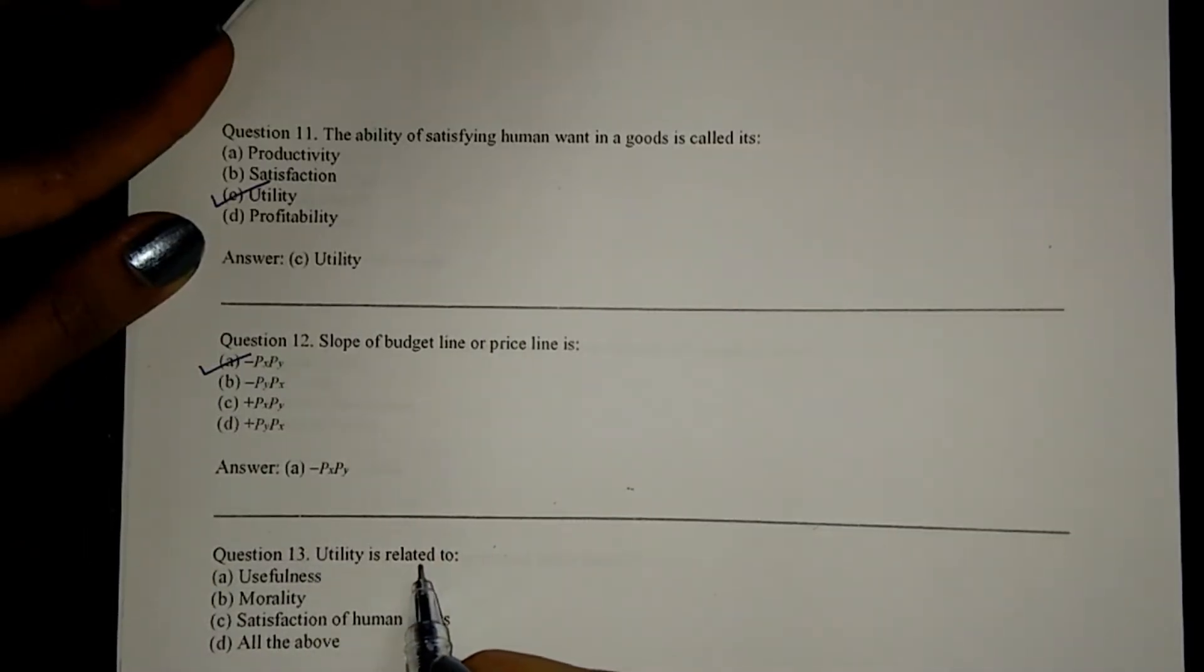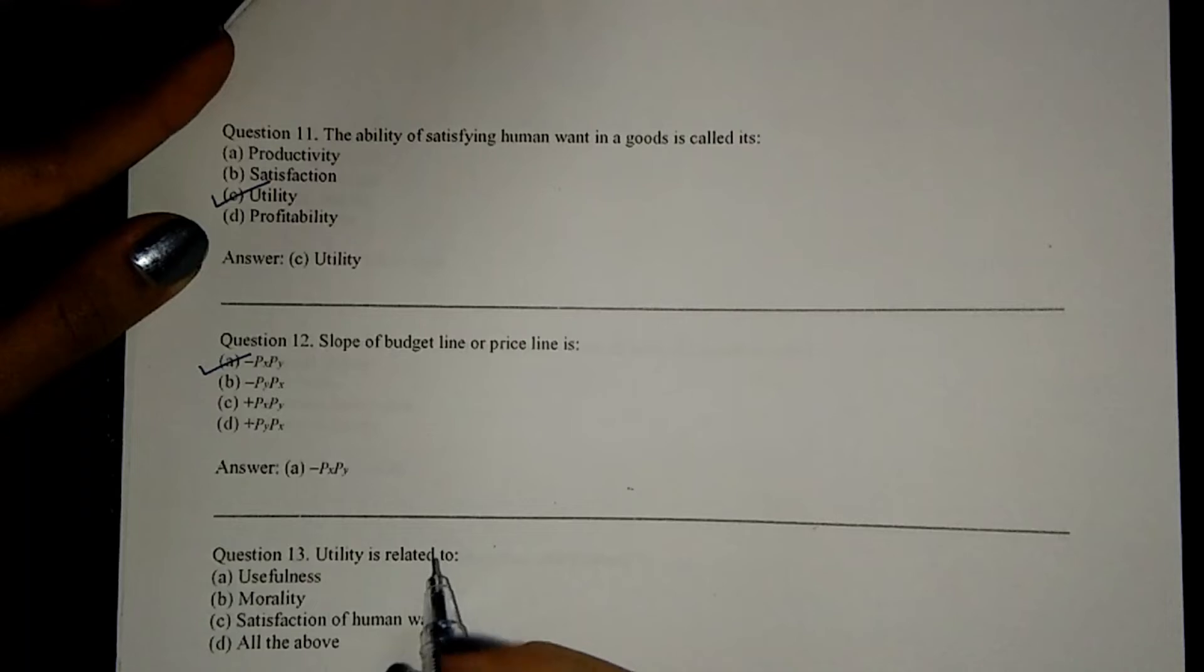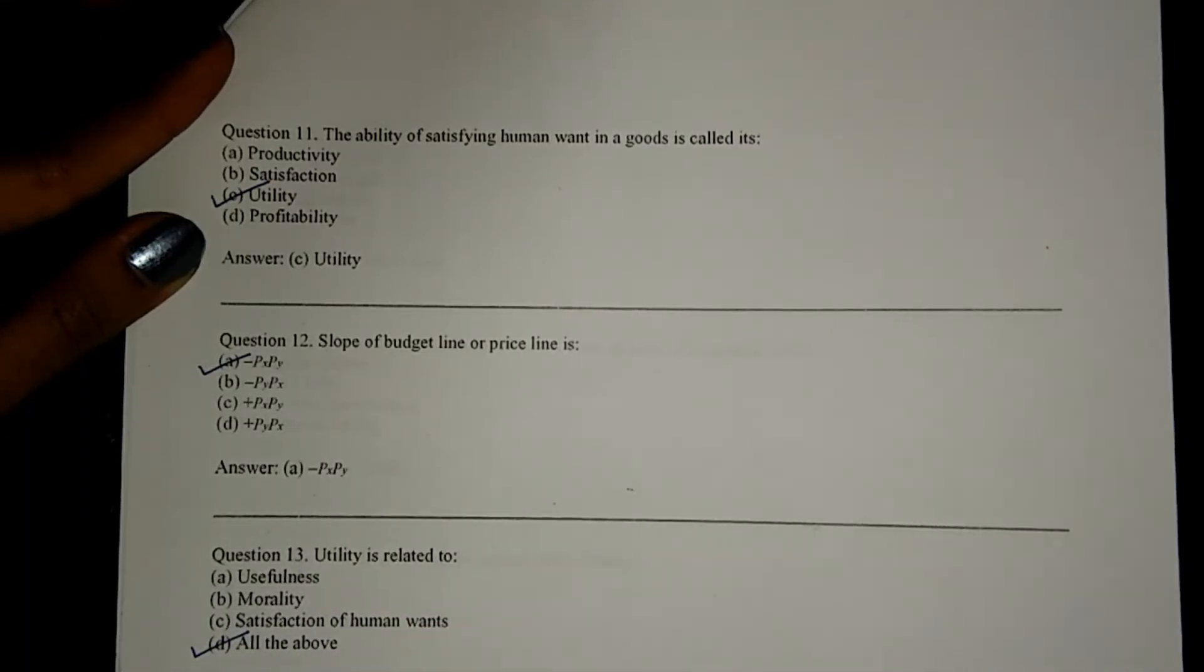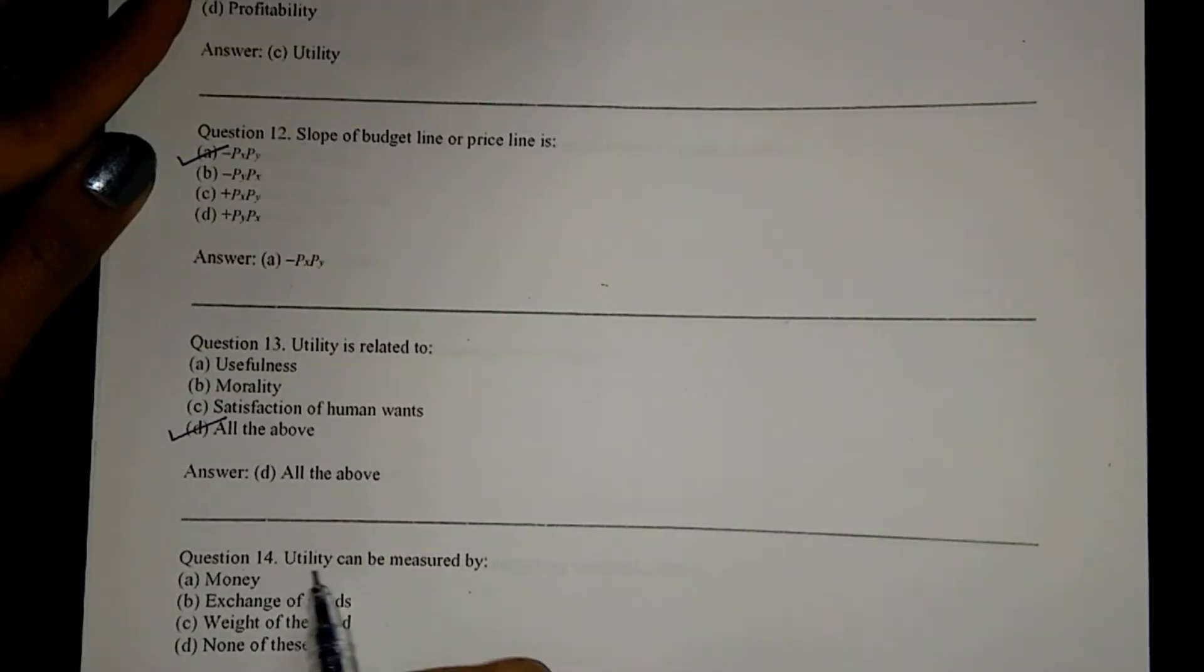Utility is related to D, all: usefulness, morality, satisfaction of human wants. Utility can be measured in money.